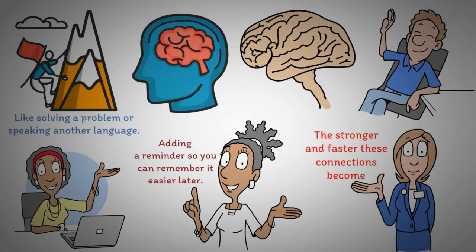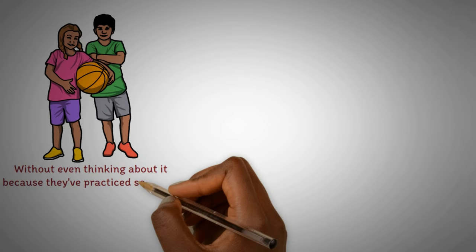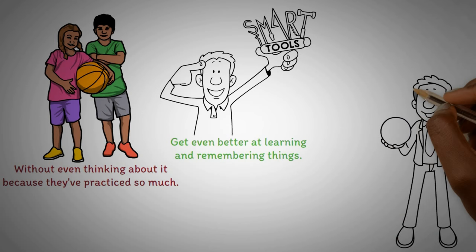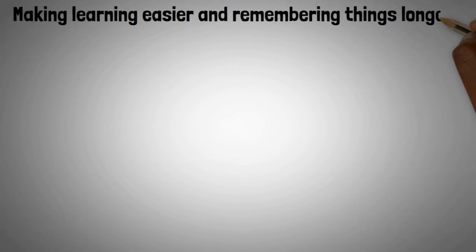Your brain cells connect to each other like dots. The more you practice something, the stronger and faster these connections become. For example, basketball players can dribble super fast without even thinking about it because they've practiced so much. Your brain can even make new cells and get even better at learning and remembering things. Making connections between different things you learn can help your brain grow new cells.